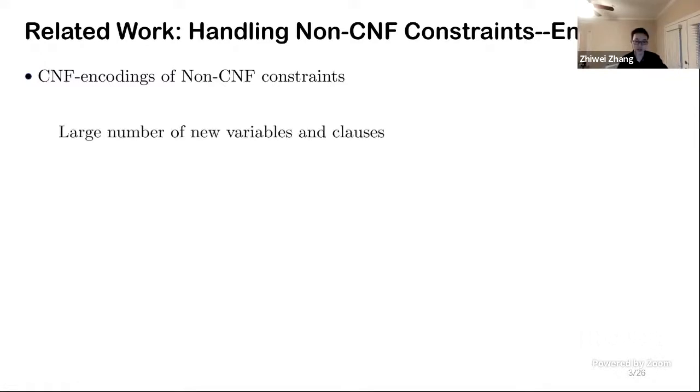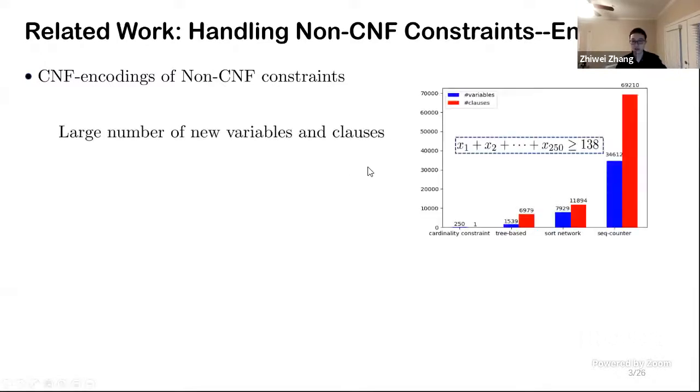First is about size. Here is the histogram about the blow-up of number of variables and clauses if we just want to encode a cardinal constraint with 250 variables. You can see the blow-up here, and it is no doubt bringing a heavy burden to the set solver and slow them down.